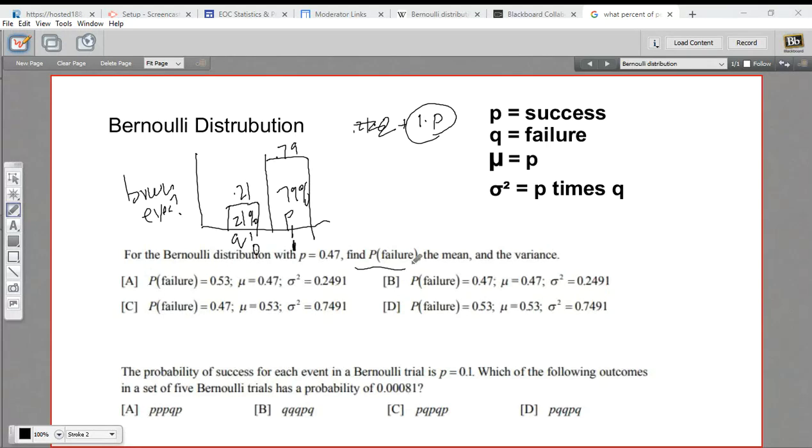Well, the probability of the failure should be pretty easy. We know the success rate, so we just take it away from 1. So 1 minus 0.47 is going to give us 0.53. So that's our failure rate. And that would mean it could be A or it could be D. So we've already eliminated C and B.